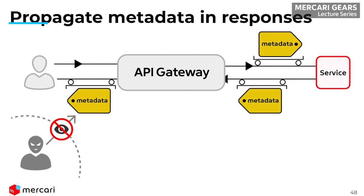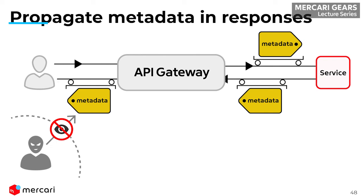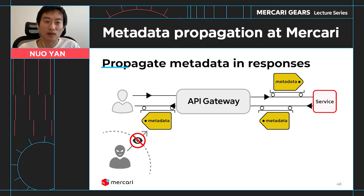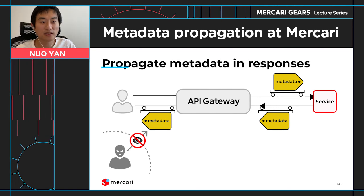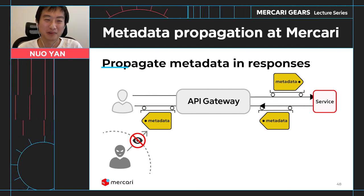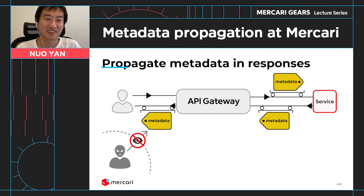If we ever implement response metadata propagation, when a request leaves our infrastructure the egress should discard all metadata in the response — similar to how ingress discards metadata from external inbound requests. This is all I wanted to discuss in this presentation. I hope it's helpful and applicable to your work. Thank you.